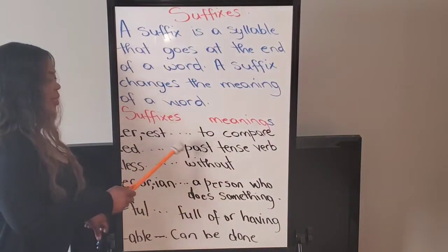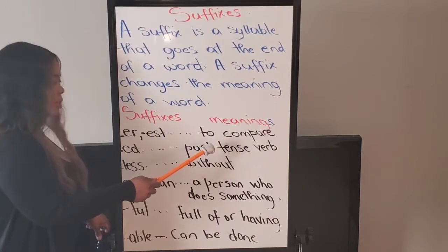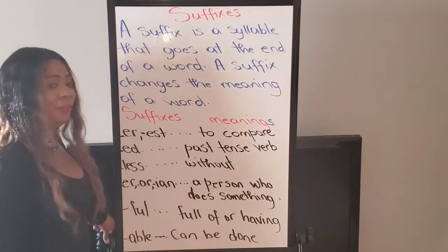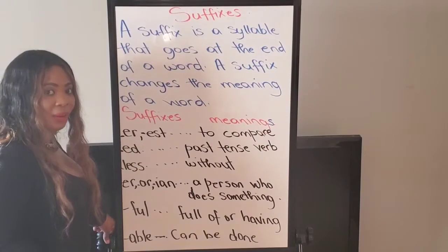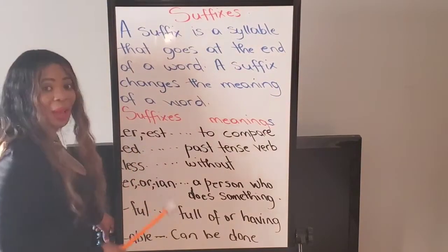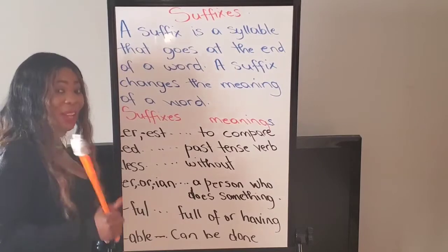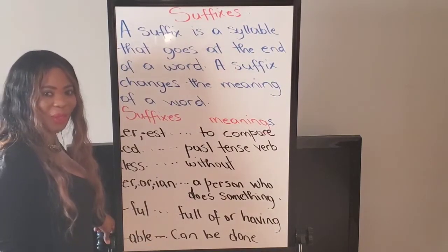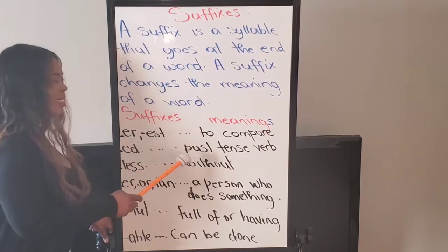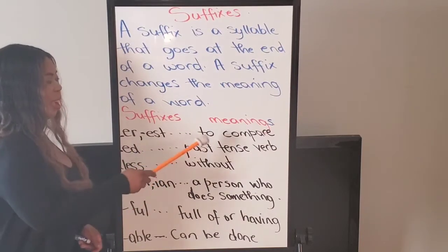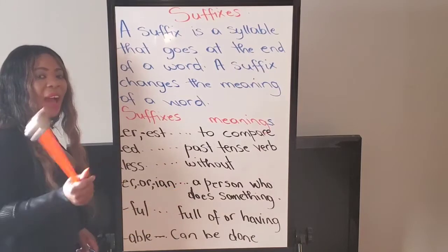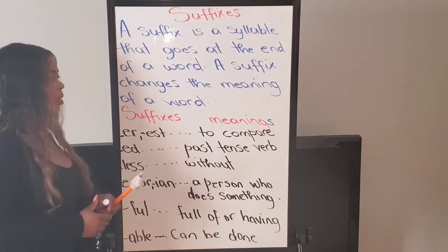ER and EST — and this means to compare. So when you think of 'big,' that one is 'bigger,' but then that one there is the 'biggest' mango on the tree. So ER and EST means to compare. Remember, suffixes go at the end of the word.